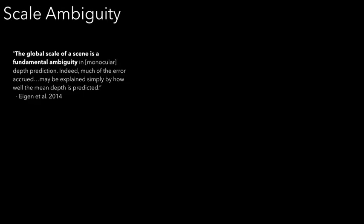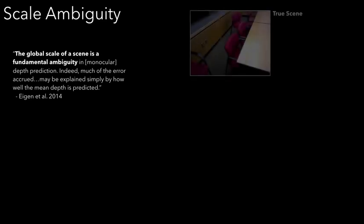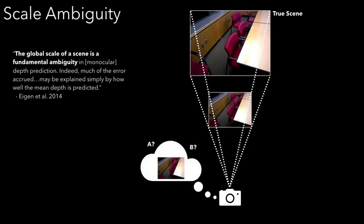This inherent scale ambiguity is a well-known issue with monocular depth estimation. In this diagram, a camera looking from a single vantage point cannot disambiguate between the true scene and a scaled-down scene that is proportionally closer.